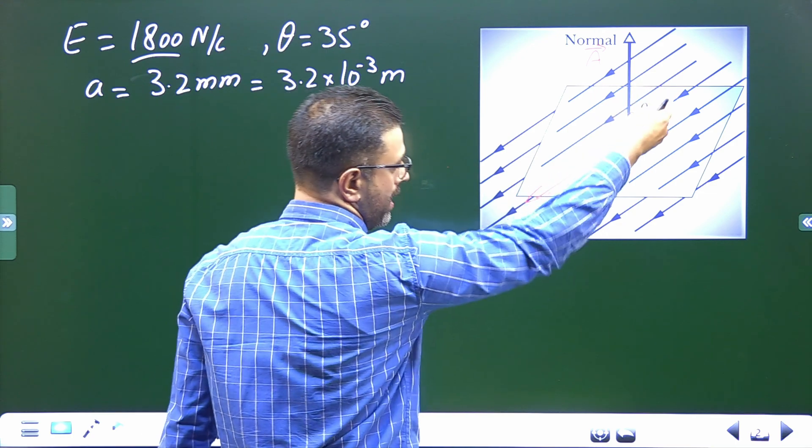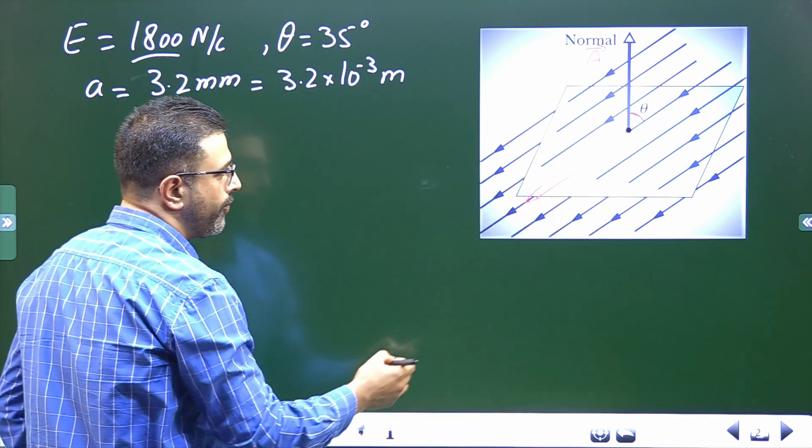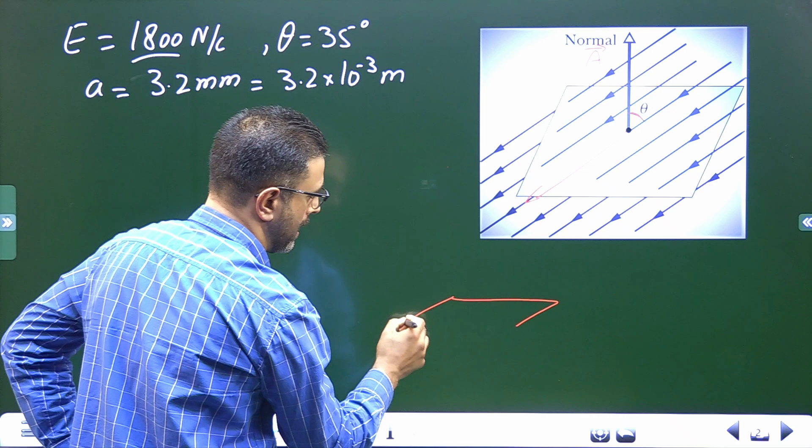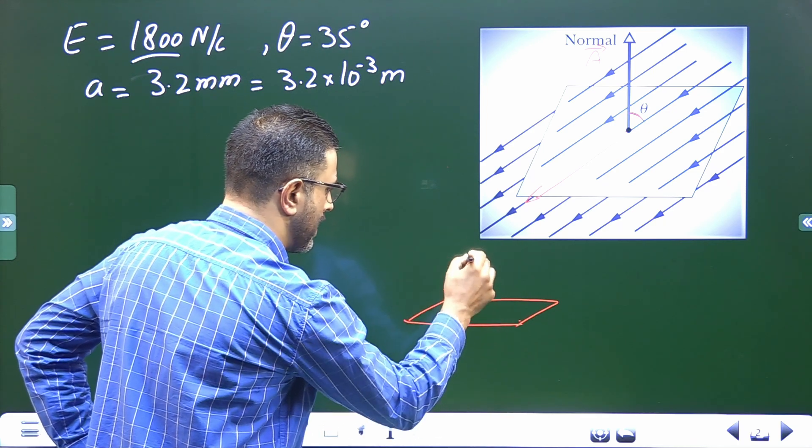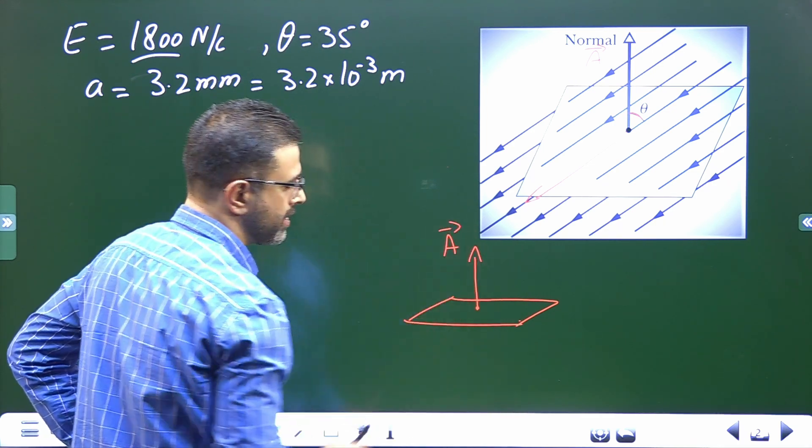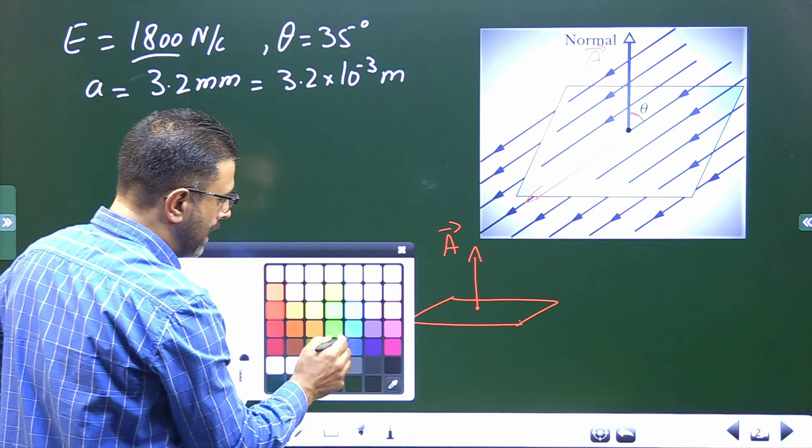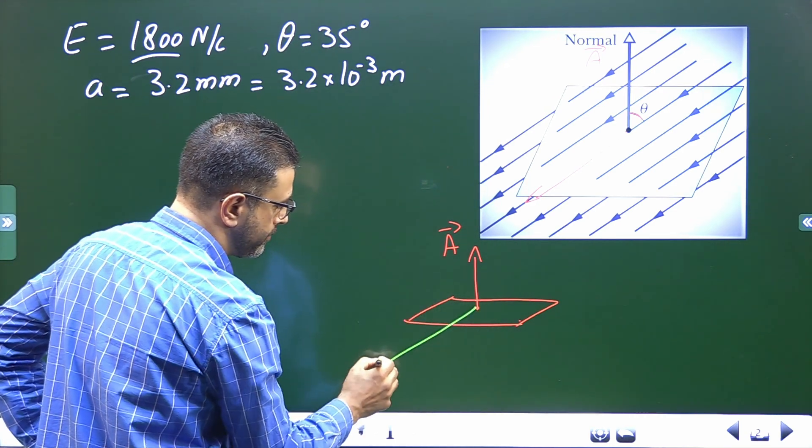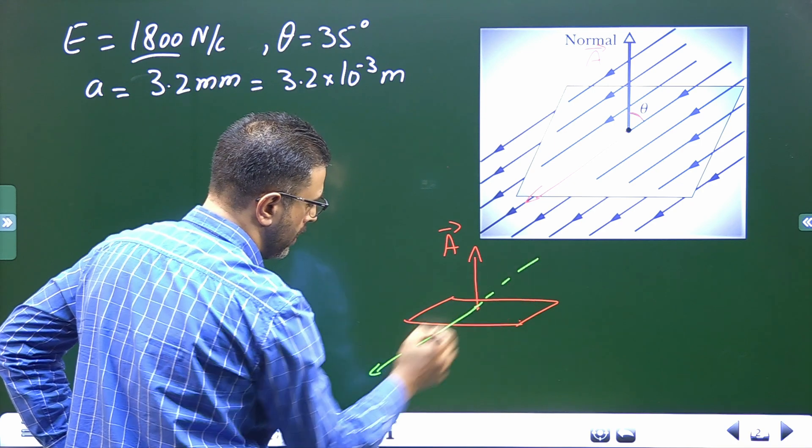Electric field is not this way, electric field is this way. So if I consider this surface like this and this is the direction of the area, electric field is this way. This is direction of electric field.